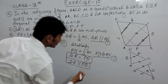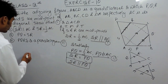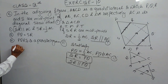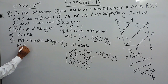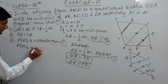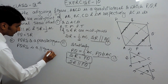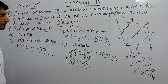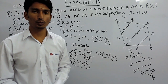These two lines are parallel and equal. In a quadrilateral, if two sides are parallel and equal, that quadrilateral is a parallelogram. So PQRS is a parallelogram. This is how we can solve all three parts. Thank you.